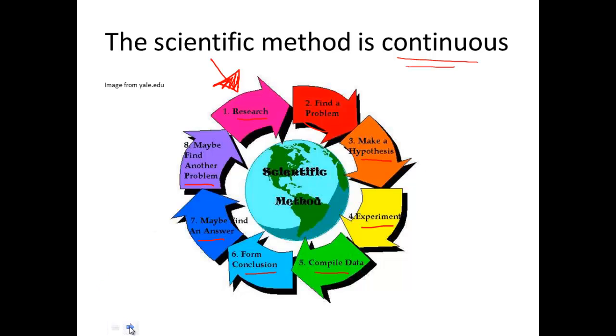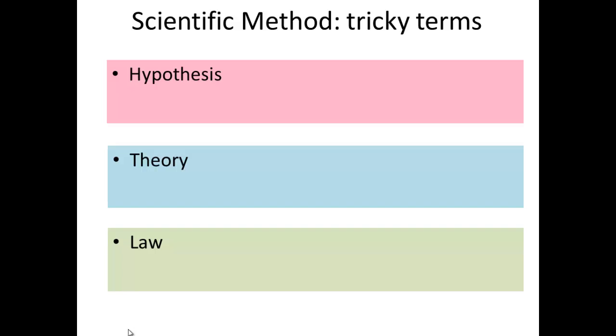There are some terms that are going to come up within the scientific method. Some of these terms are tricky. Hypothesis, theory, and law. First of all, I want to talk about what hypothesis is within the scientific method. Sometimes when we're out of the science classroom, hypothesis and theory are used incorrectly. So this is a prediction of what will happen. And a hypothesis is based on what you already know. So it is a prediction.